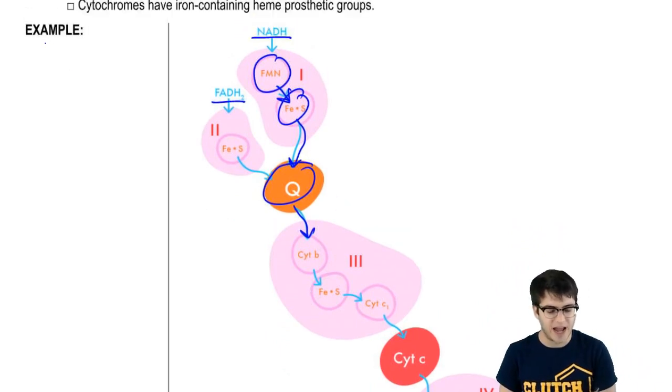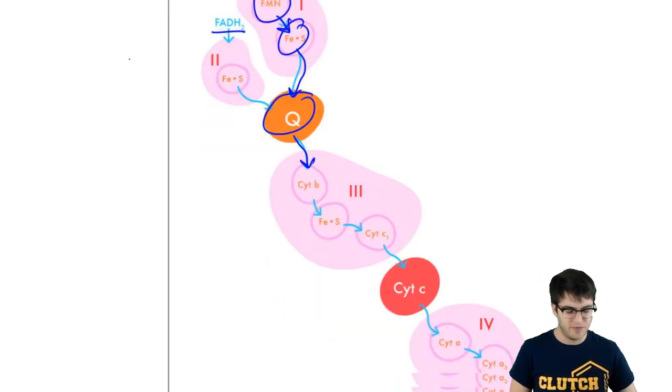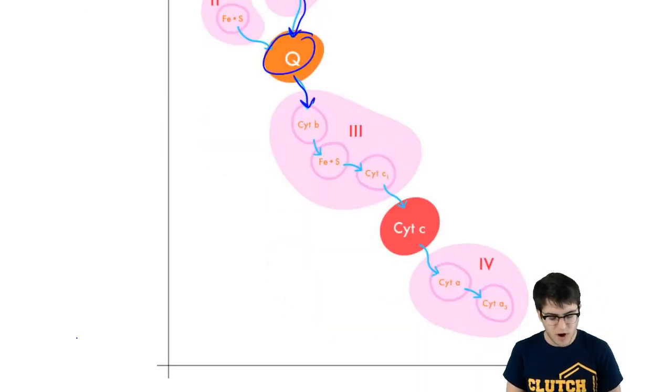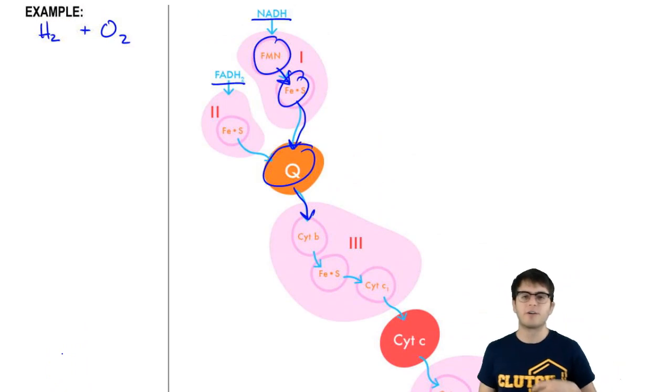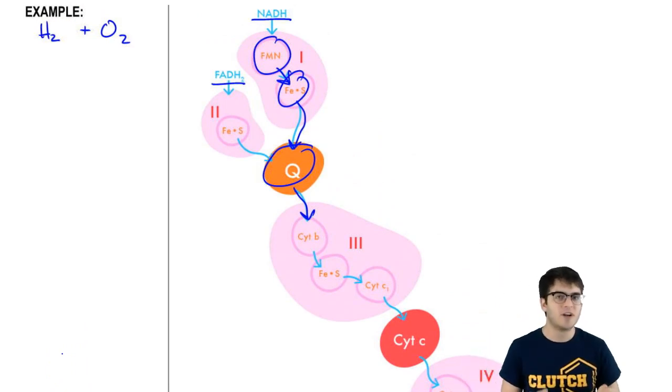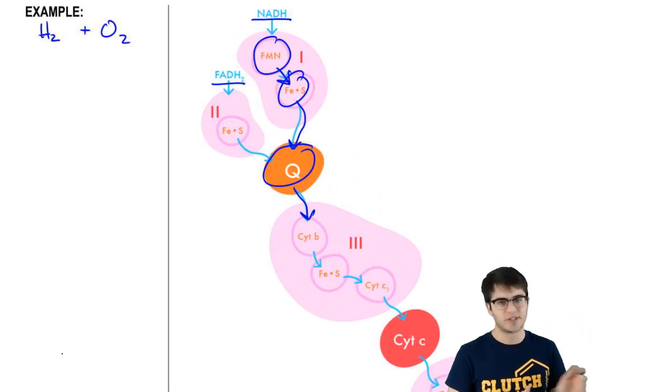And just to recap, if we were to take hydrogen and oxygen gases and form water, well, this would release a ton of energy. But it's hard for cells to capture all that energy and use it efficiently, right? Cells can only capture a little bit of that energy that gets released and use that for stuff.